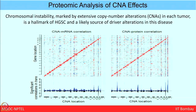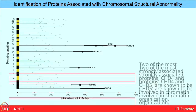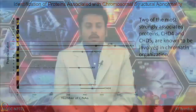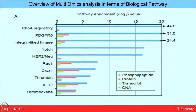The blue data represents the complete profile of newly generated data, while the black represents data already present in the database. From the CNA-mRNA and CNA-protein correlations, two important proteins — CHD4 and CHD5 — were found to have the maximum number of CNAs. Further study revealed these two proteins are involved in chromatin organization. Taking phosphopeptides, proteins, transcripts, and CNA together revealed the top pathways playing a role in this cancer pathobiology.